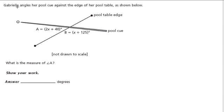Okay, in this video, Gabrielle angles her pool cue as shown below. So the pool cue is a line, right? It certainly is a 3D shape, but here they're representing it as a line. They should tell us that, but they don't.